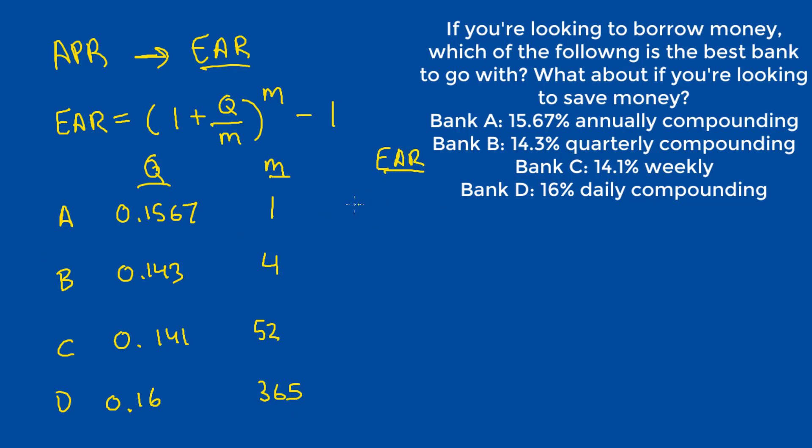So if we put the variables for each bank into the formula for EAR, we should get 0.1567 for A, and 0.1508 for B, and 0.1512 for C, and 0.1735 for D.